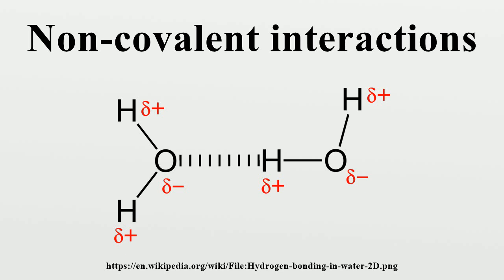Pi-effects can be broken down into numerous categories, including pi-pi interactions, cation-pi and anion-pi interactions, and polar-pi interactions. In general, pi-effects are associated with the interactions of molecules with the pi systems of conjugated molecules such as benzene.